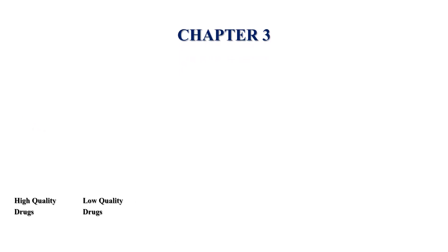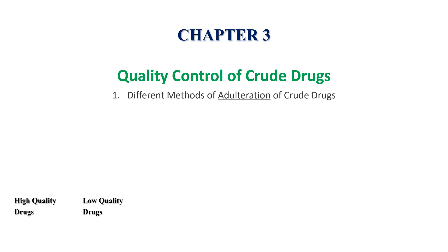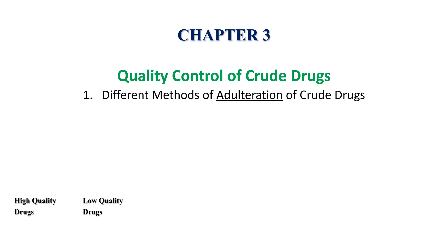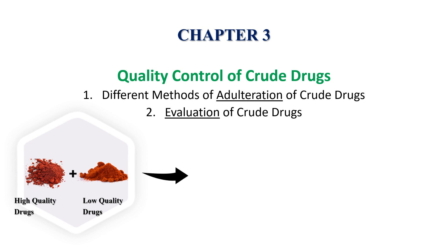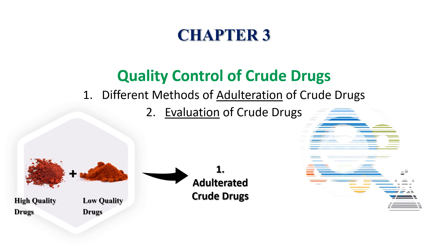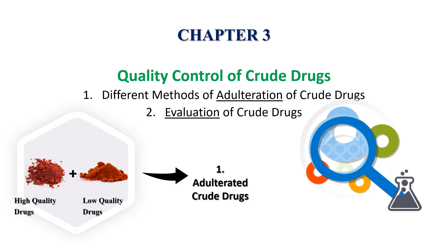Chapter three: as per our old sayings, if we want to say something is right, we should know what is wrong. Likewise, if we want to control the quality of a drug, we should be aware of adulteration. Then and only then can we evaluate any crude drug based on standards provided in various pharmacopoeias like the Indian Pharmacopoeia. This chapter gives knowledge about the definition of adulteration and evaluation of crude drugs.